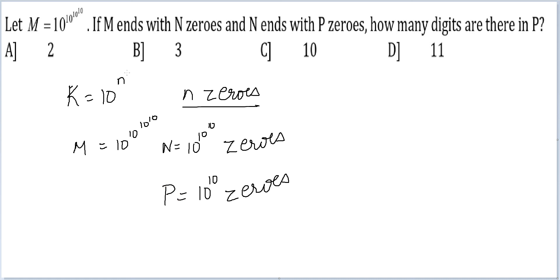So, now if k is our number, that is 10 raised to the power n, it has n plus 1 digits.